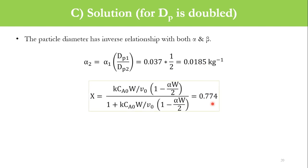Accordingly we get conversion as 77.4%. This is the overall solution—if we are doubling the particle diameter, accordingly we get increased conversion in our system.